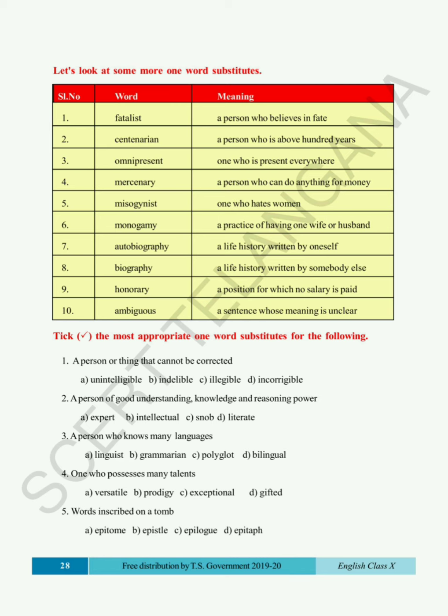Now the last word in the table — 'ambiguous' means a sentence whose meaning is unclear. This list you have to remember. Now moving to the questions. The instruction is: take the most appropriate one word substitute for the following. One sentence is given and you have to choose the correct substitute word from four options. The first one: 'A person or thing that cannot be corrected.' The options are: A. intelligible, B. indecible, C. eligible, D. incorrigible.